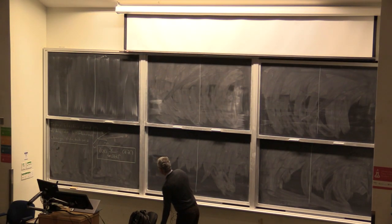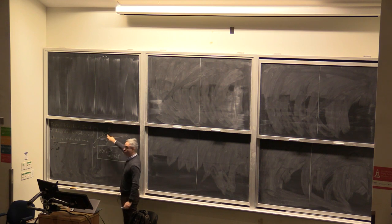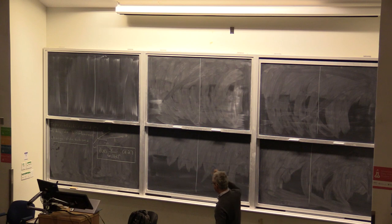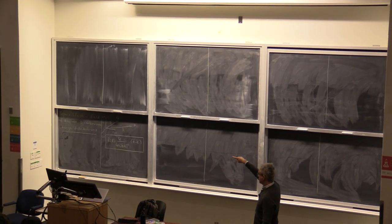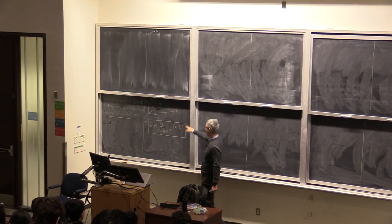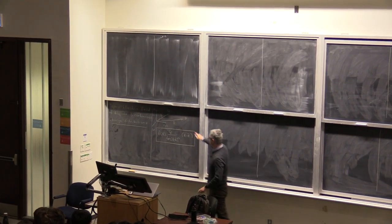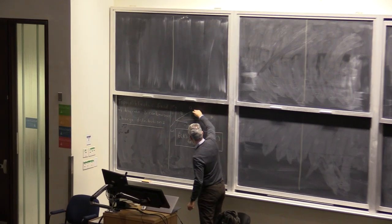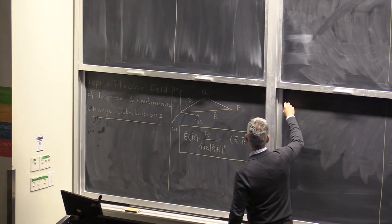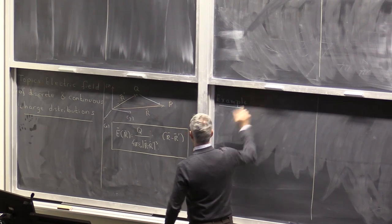Let me remind you of the general formula. If I have a point charge Q whose position is defined by position vector R-prime, and I'm interested in the field it creates at observation point P, then that field is given by the formula. And superposition applies. Here is an example where we will see both this formula and superposition at once.